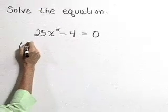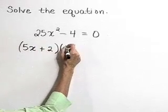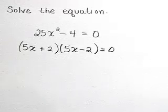So it's going to factor nicely as 5x plus 2 times 5x minus 2, and that's set equal to 0.